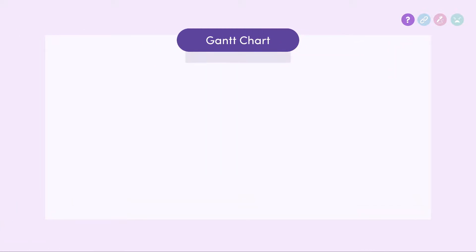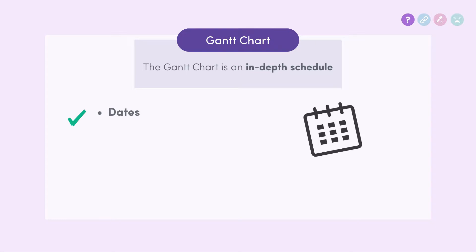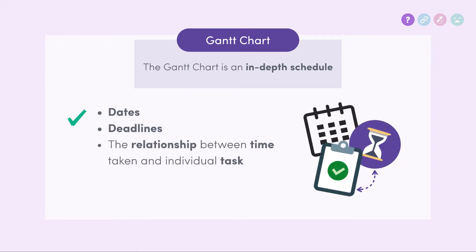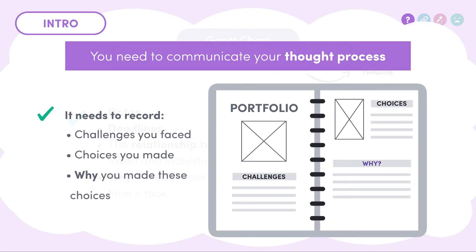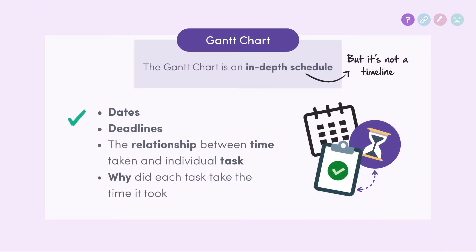Now the Gantt chart is a time plan. This is where you plan your dates, deadlines, and their relationship to each individual task. If you Google Gantt charts you might find that they look like timelines, but with DT Gantt charts it's not just a record of how long each event should take. As per usual we need to justify each task and why it took us the length of time it took. Remember back to the introduction video where we talked about the purpose of a portfolio — to tell the marker why — and this is going to be part of the Gantt chart we'll be making in the next video.